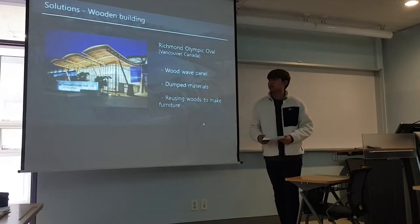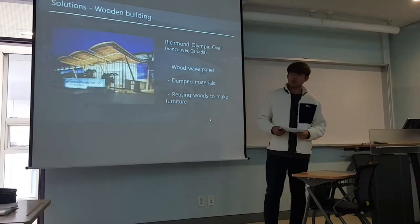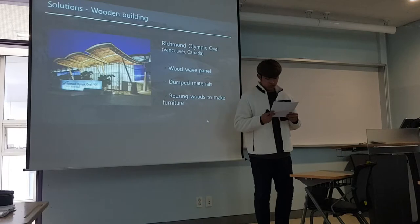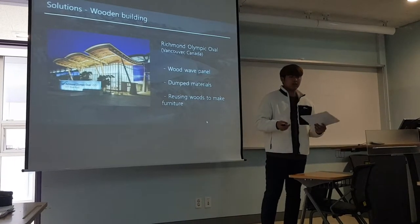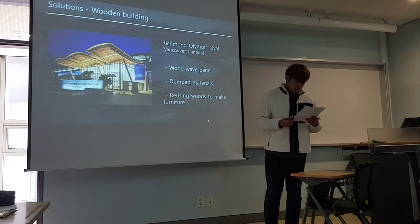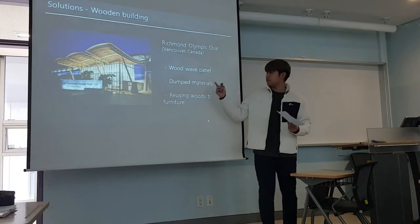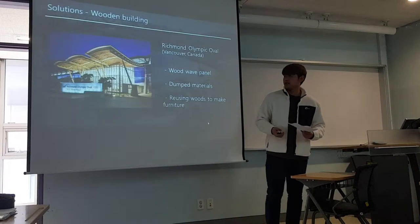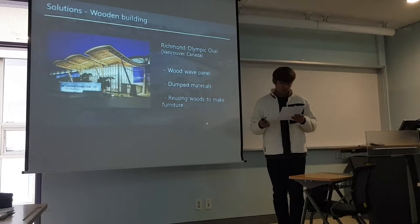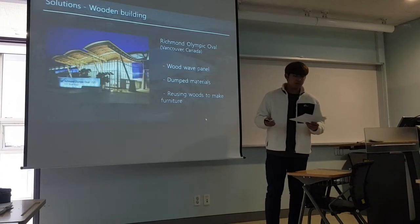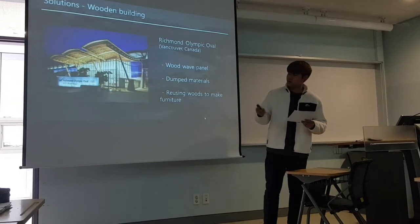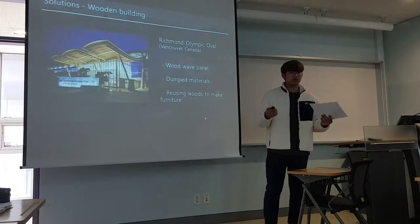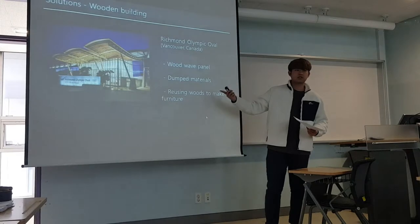To solve these problems, I came up with the idea of wooden buildings. This is a picture of the Richmond Olympic Oval, located in Vancouver, Canada, which was built for speed skating at the 2010 Vancouver Olympics. This wooden building used wood wave panels to absorb noise. The most interesting fact is that all the wood used was previously discarded due to bug damage, and other wooden furniture like benches and closets were made from trees cut to clear the construction site.